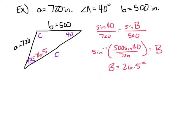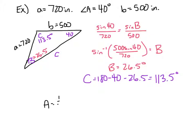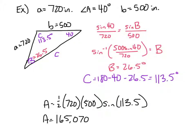Okay, so to find angle C, I just take those two angles away from 180. So, C is going to equal 180 minus angle A minus angle B. So, angle C is 113.5 degrees. All right. So, now I have the two sides, the included angle. I can plug that into my area formula. Area equals one half of the two sides multiplied times the sine of their included angle. So, the area of this triangle comes out to 165,070 inches squared.